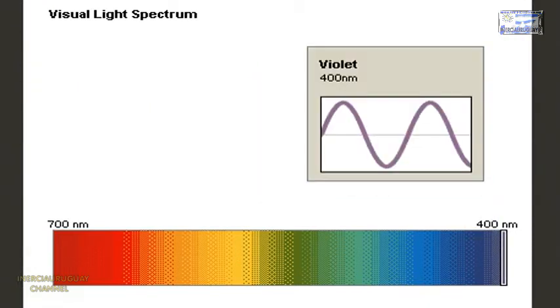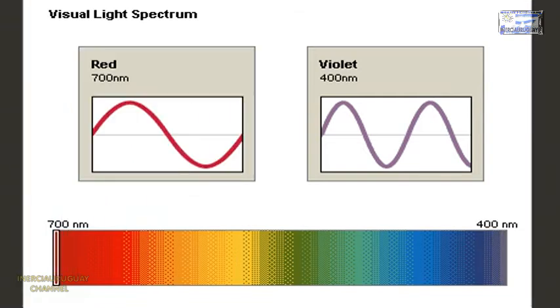Violet light has the shortest wavelength and highest frequency our eyes can detect. Red has the longest wavelength and lowest frequency we can see.